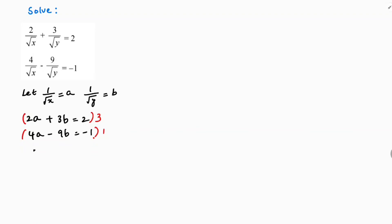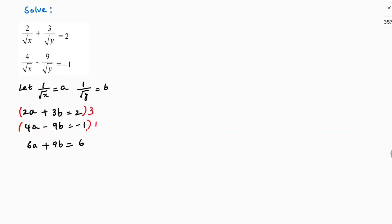So now here it will be 6a, because I'm multiplying with 3, so 2 into 3 is 6a plus 9b equals 6. Second equation as it is: 4a minus 9b equals minus 1.